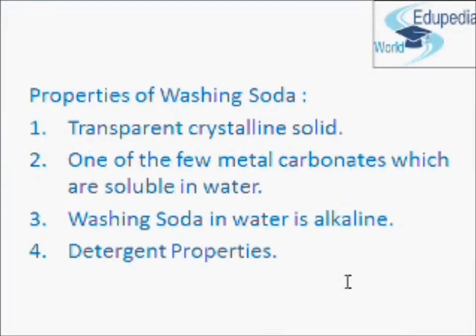Now, properties of washing soda. Washing soda is a transparent crystalline solid. It is one of the few metal carbonates which are soluble in water. The solution of washing soda in water is alkaline, which turns red litmus to blue. Washing soda has detergent or cleansing properties because it can remove dirt and grease from dirty clothes. It attacks dirt and grease to form water-soluble products which are then washed away on rinsing with water.